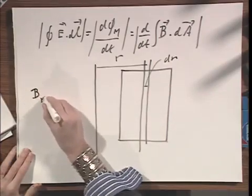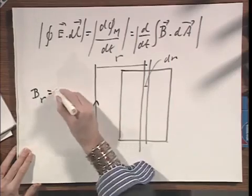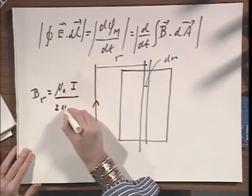And the magnetic field at that position r away from this wire, with current I, is something that you by now know by heart, is μ₀I divided by 2πr.